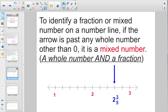And the last thing you need to know to identify a fraction or a mixed number on a number line: if the arrow is past any whole number other than 0, that's going to mean it's a mixed number, a whole number and a fraction together. So again, it's past the whole number 2. So your final mixed number answer is 2 and 3 fifths. It's past the whole number 2, it is the third line segment over, and there was a total number of 5 unit segments between there. Are you ready to do some on your own? Let's take a look.